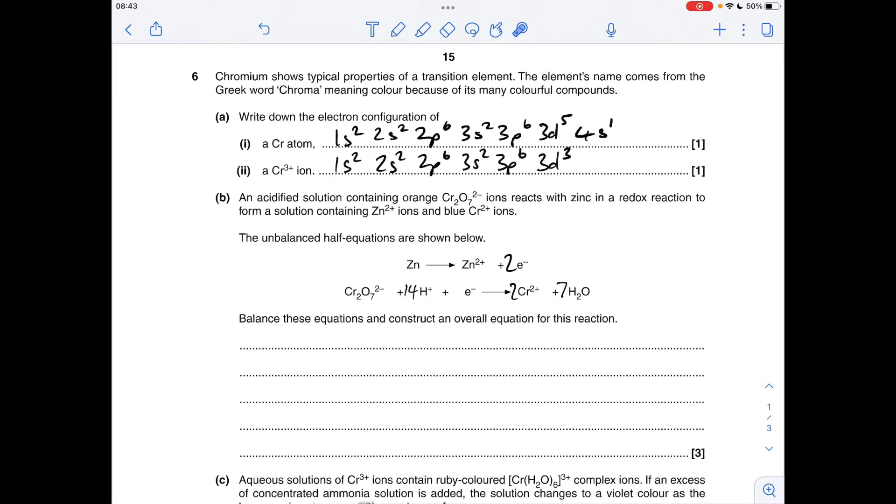So we're moving on to the charges now, so I'll just ignore the electrons for a moment. So 2 minus with 14 plus, so that's 12 plus on the left. We've only got 4 plus on the right, so we need to bring this 12 plus down to 4 plus, so it matches that. So we need eight electrons.